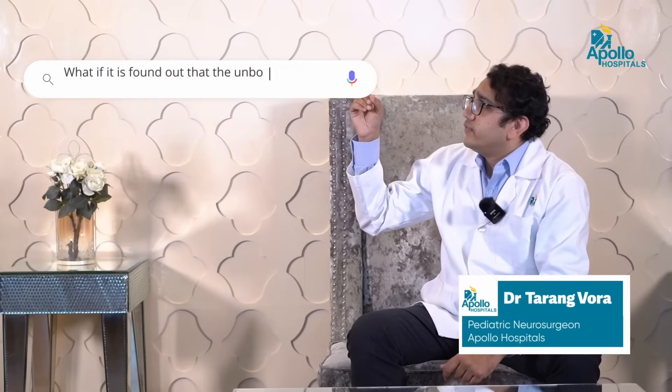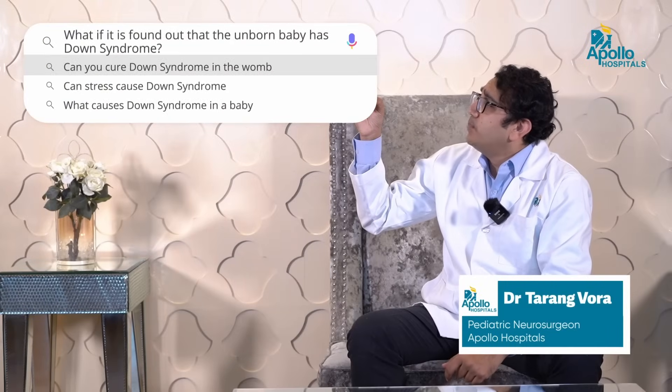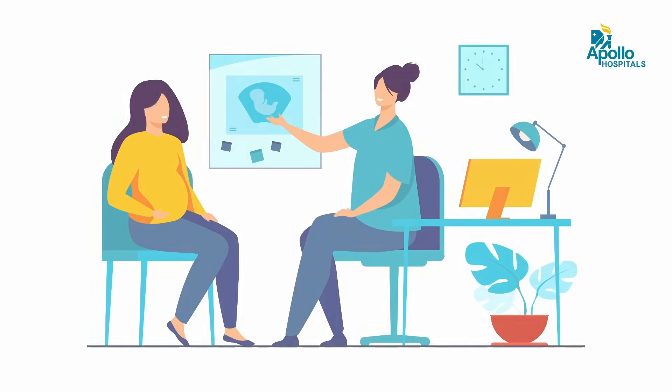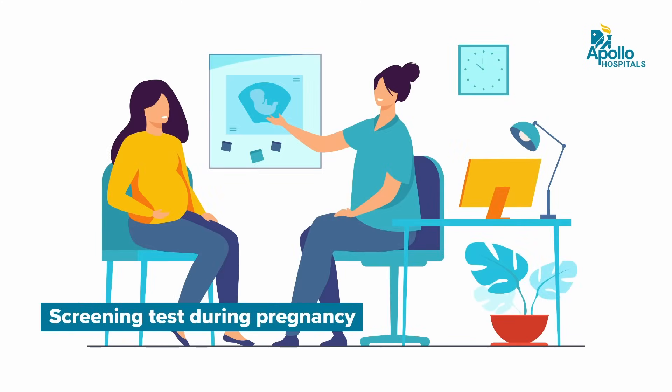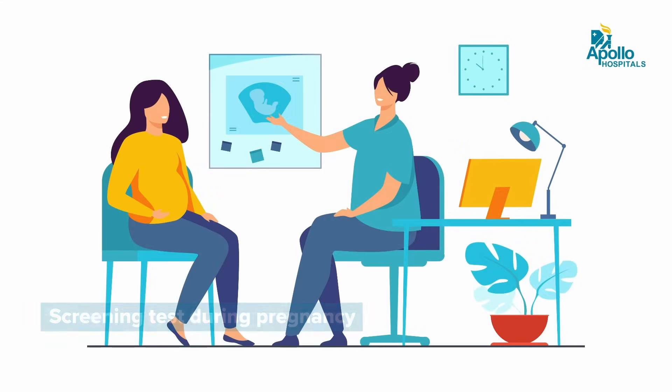What if it is found out that the unborn baby has Down syndrome? Based on those screening or definitive tests made during the pregnancy, if it is before the 22nd week of pregnancy, the parents can make an informed choice after discussion with relatives about whether they want to continue with the pregnancy.